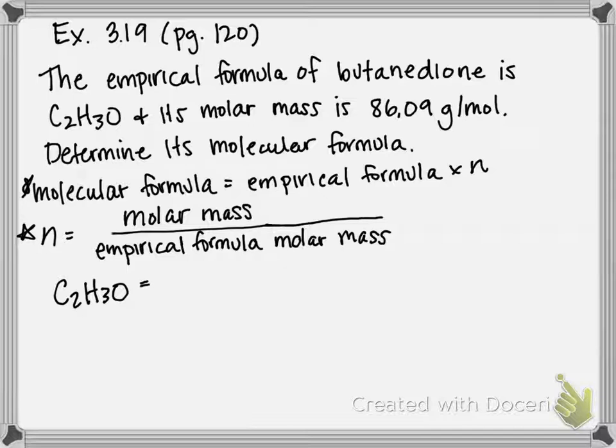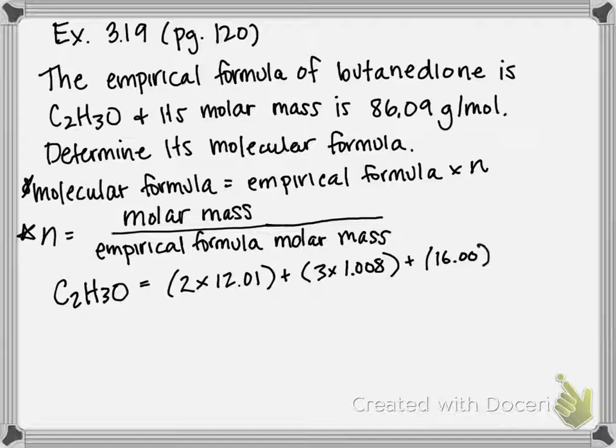Since it's C2H3O, its molar mass is going to be 2 times carbon's molar mass plus 3 times hydrogen's molar mass plus just oxygen's molar mass. So if we multiply and add those together, you should get 43.04, and that's in units of grams per mole.